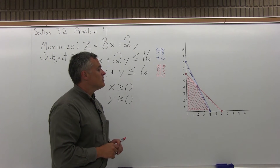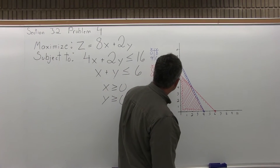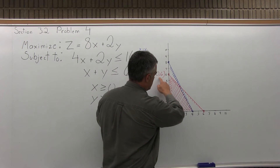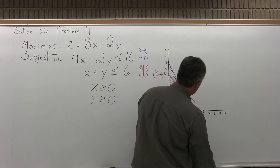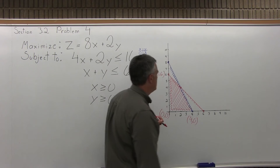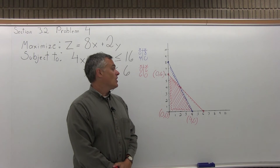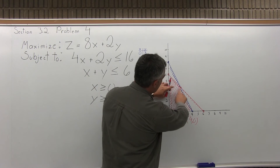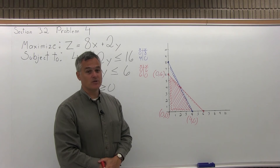Step two is label your corner points. One corner point is (0, 6) — be careful, not (6, 0). (6, 0) is not a corner point. (0, 6) is a corner point. (0, 0) is a corner point. (4, 0) is a corner point. And the intersection of the red line and the blue line also makes a corner point. Because most people draw these graphs freehand, it's not accurate enough to try and read the intersection off the graph.